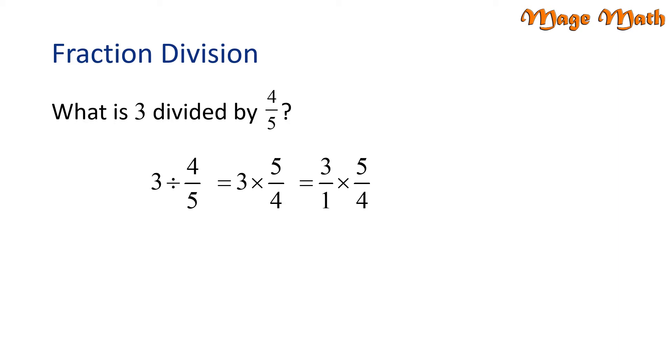We do this because, if you remember, to multiply fractions, we multiply straight across the numerators and denominators. Okay. 3 times 5 is 15 and 1 times 4 is 4. So the answer is 15 fourths. Great job!